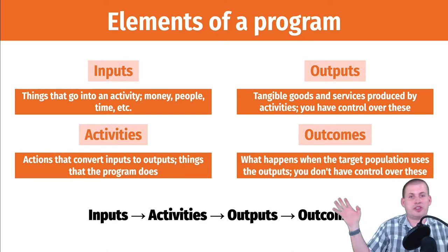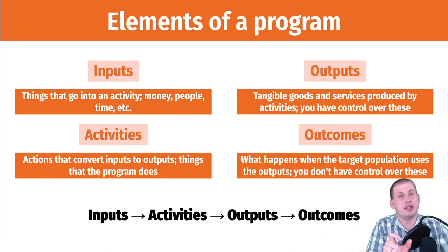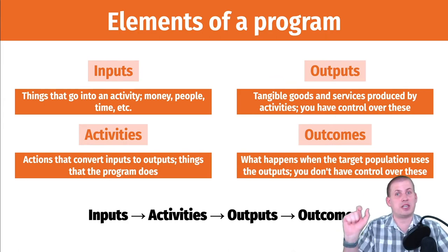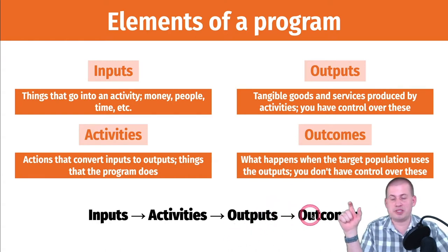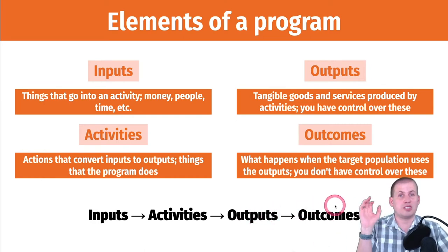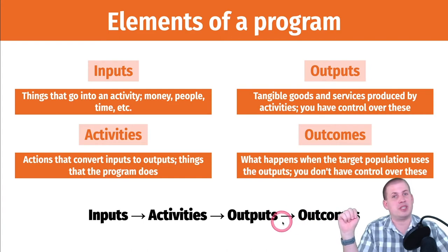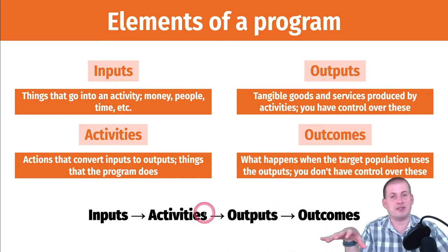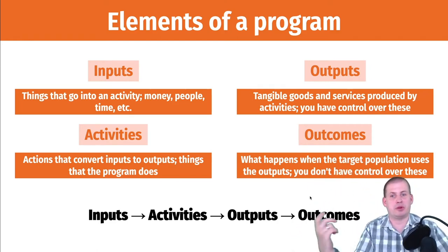This is the general process: you start with inputs, those go into an activity, that activity produces outputs, and then down the line you hope those outputs turn into outcomes. The trickiest part is measuring the connection between outputs and outcomes — hoping that the inputs, activities, and outputs you're managing lead to some more distant outcome. That is the whole focus of this class: measuring that arrow.